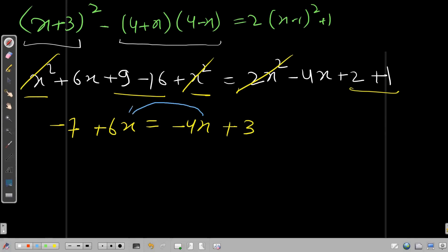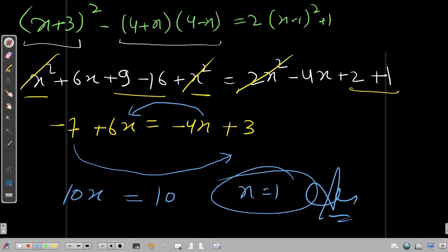So I'm taking this 4x in the left-hand side and this 7 in the right-hand side. It will become 10x in the left-hand side and 10 in the right-hand side. So x would be 1?